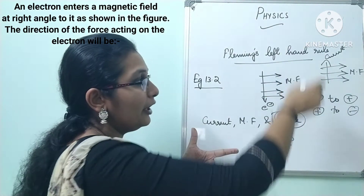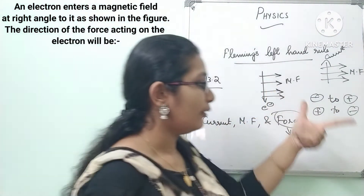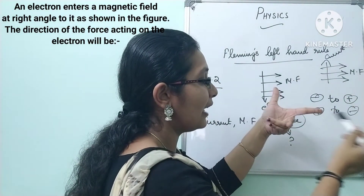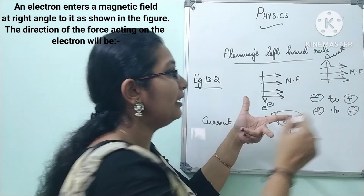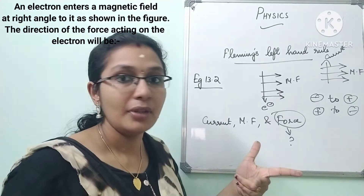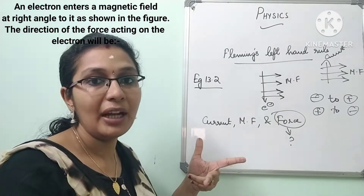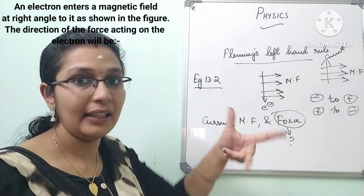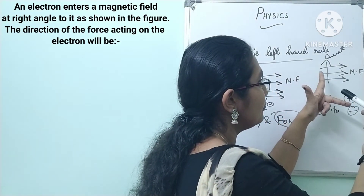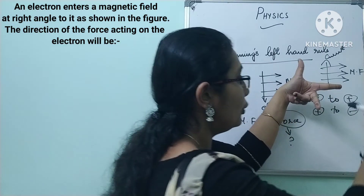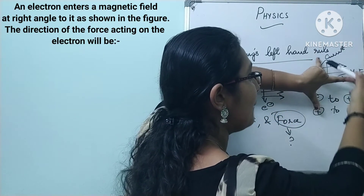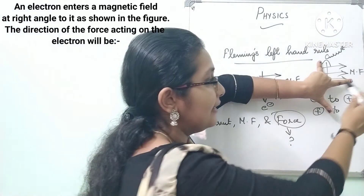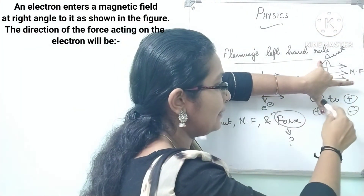According to your diagram, place your left hand so that the fingers align. If I place it like this, the magnetic field direction is correct but my current direction is different — it needs to go upward. So you have to turn your hand while keeping the relative directions unchanged. I want the direction of current to be upwards and the direction of magnetic field to be to the right.